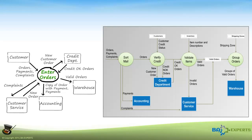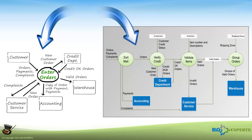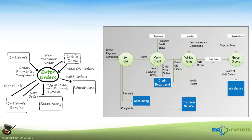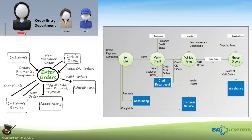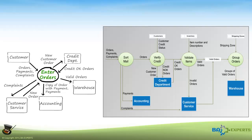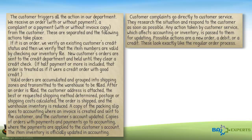To demonstrate the balancing process in real life, we're going to use a context level diagram showing an enter orders process and the lower level diagram. We developed both diagrams working with Mary, the department manager of the order entry department, and Paul, an order entry clerk that reports to Mary.